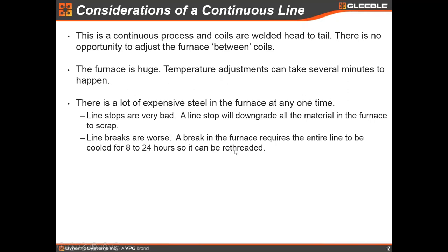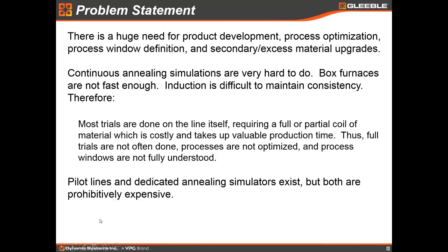Temperature adjustments take several minutes in the furnace, and there's a lot of very expensive steel in the furnace at one time. Warmer coils are expensive, and even more so for TRIP and TWIP steels with costly alloying elements — secondarying any of those is a significant economic hit. Line breaks must also be avoided: if there's a line break in an annealing furnace, you have to shut the entire furnace down and cool it for 8 to 24 hours before workers can re-thread it. All the material in the furnace during that time — potentially half a coil or more — will be over-annealed and scrapped.